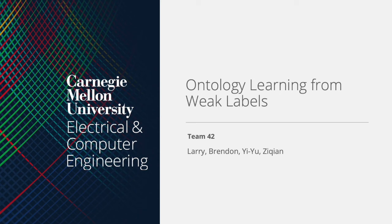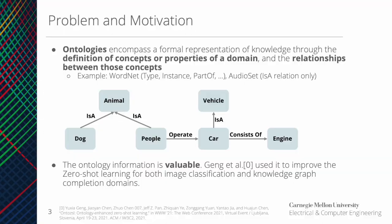Hello, we are team 42 presenting on the project ontology learning from weakly labeled data. First, we will define what an ontology is. An ontology is a formal representation of knowledge to define concepts and their relationships.